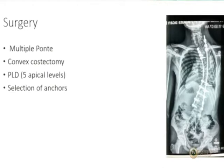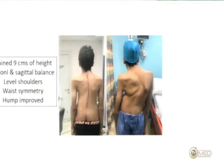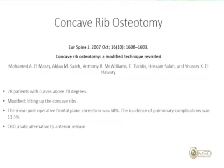The post-op X-rays show the result after multiple Ponte osteotomies, convex costectomy, and posterolateral discectomies at five levels through the costectomy bed. The anchors used here are sublaminar wires — I'm an old-fashioned surgeon trained on sublaminar wires. I believe wires provide very good correction and allow traction at the apex in severely deformed vertebrae where placing pedicle screws in such a rotated spine is very difficult and not advisable. Pre-op versus post-op clinical photographs clearly show the improvement.